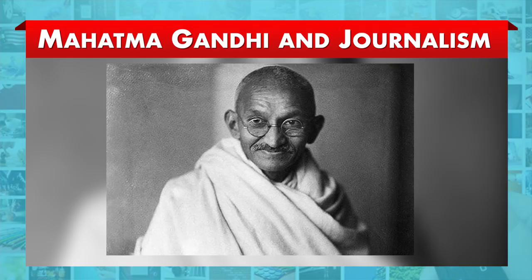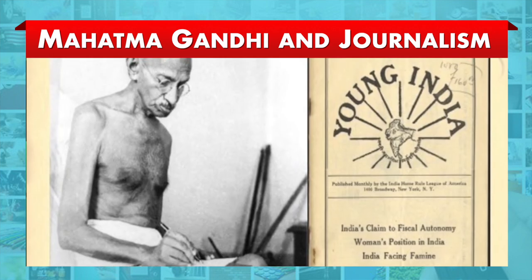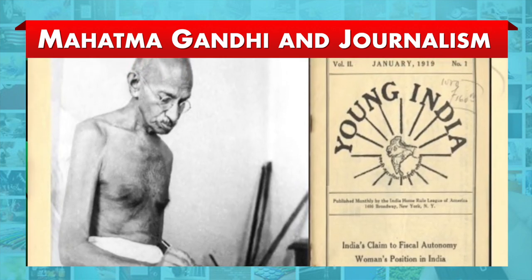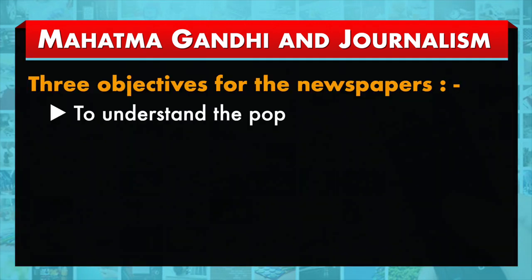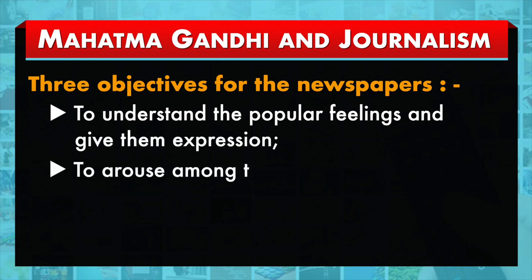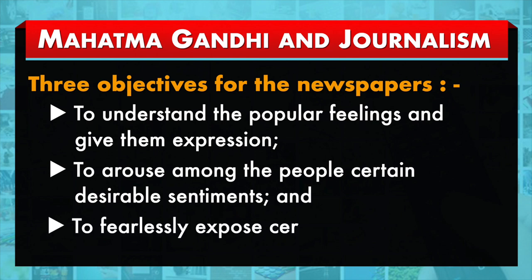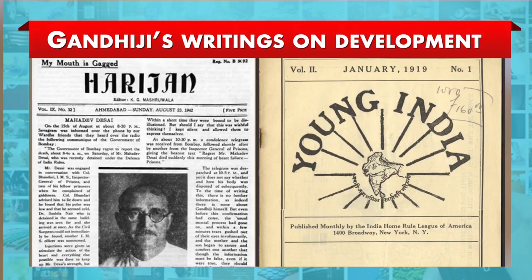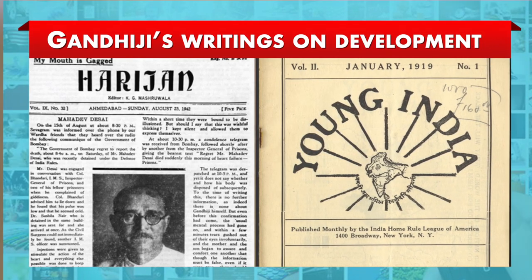Mahatma Gandhi in India practiced development reporting even before the term came into existence. Mahatma Gandhi, who can be called a development journalist, underlined three objectives for the newspaper: to understand the popular feeling and give them expression, to arouse among the people certain desirable sentiments, and to fearlessly expose certain defects in public life. He set an example to journalists in practicing development journalism.